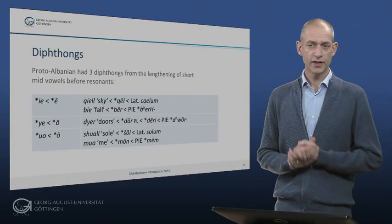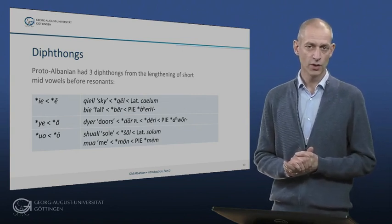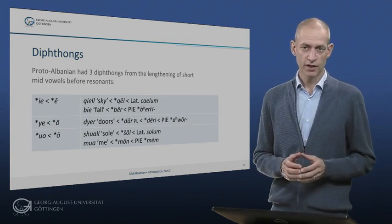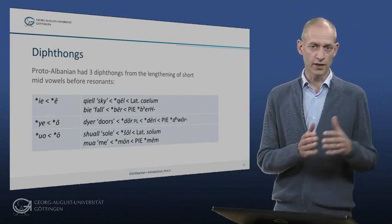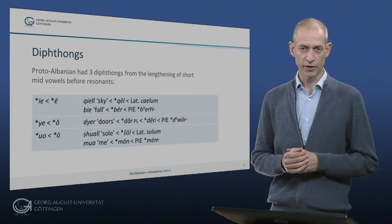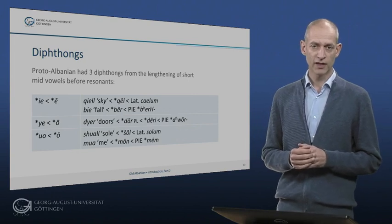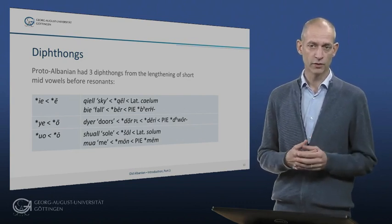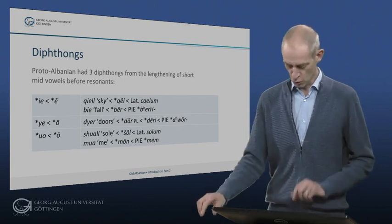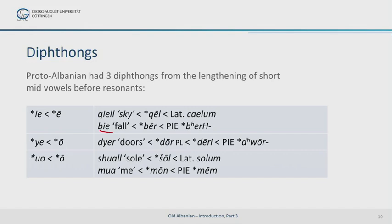In Proto-Albanian, three diphthongs arose from long mid-vowels E, Ö and O, which had arisen mainly, though not exclusively, in front of tautosyllabic word-final L, R or N. The resulting diphthongs IE, ÜE and UO show that the phonetic change was parallel for all three vowels. Examples showing this development include inherited words from Proto-Indo-European such as BIER 'to fall,' DUR 'the plural of door,' and MOOR 'me,' as well as Latin loanwords such as QIELL for 'sky' and SHPËLL for 'soul.'